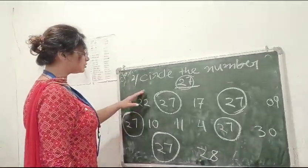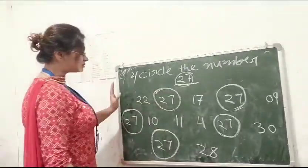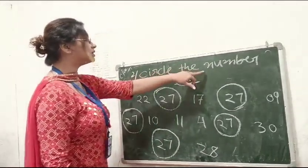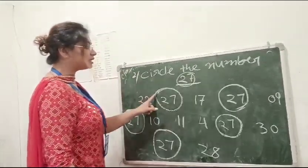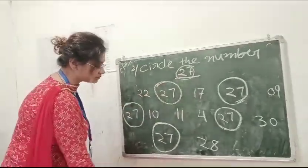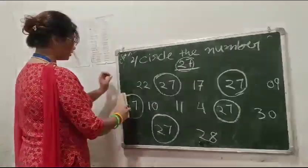So, all the 27 are circled. So, circle the number 27. You have to just circle only 27. This number. Okay. Thank you. Perfect. Thank you.